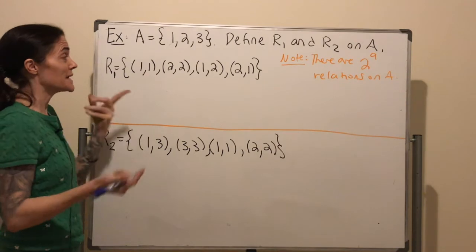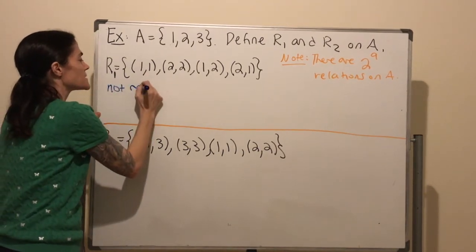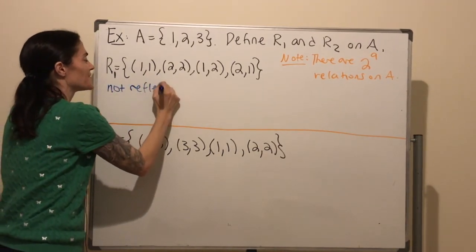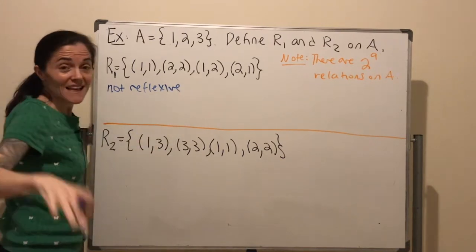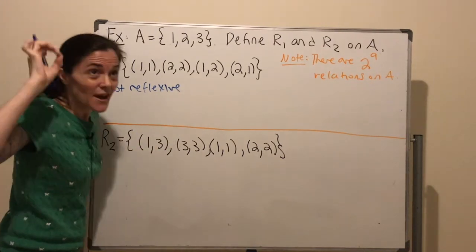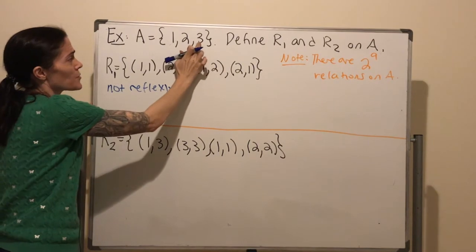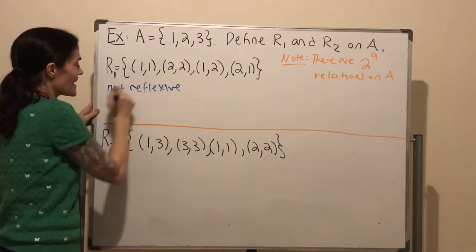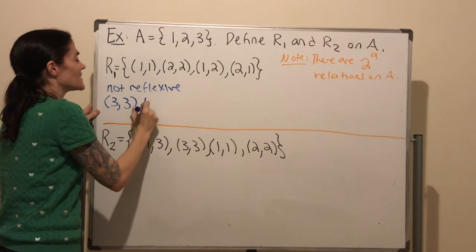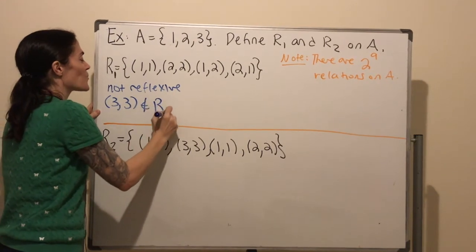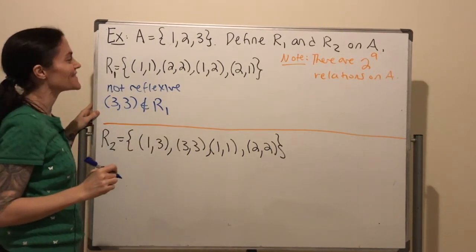R1, immediately, we see this is not reflexive. Because reflexivity is a for-all statement. The element 3 is in A, but (3, 3) is not in R1. So this is not reflexive.